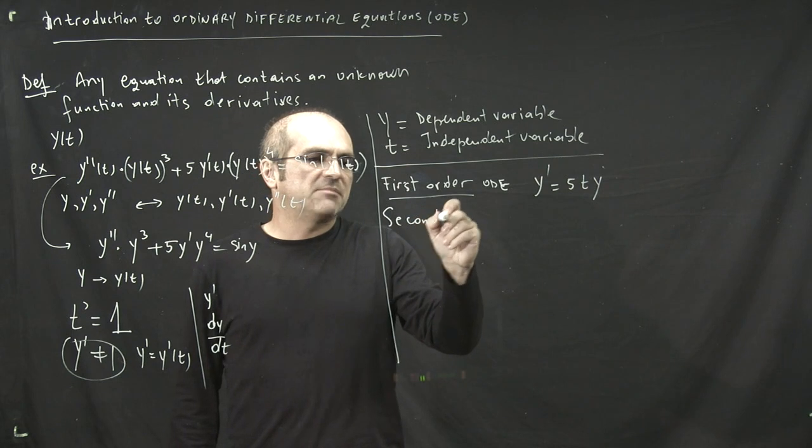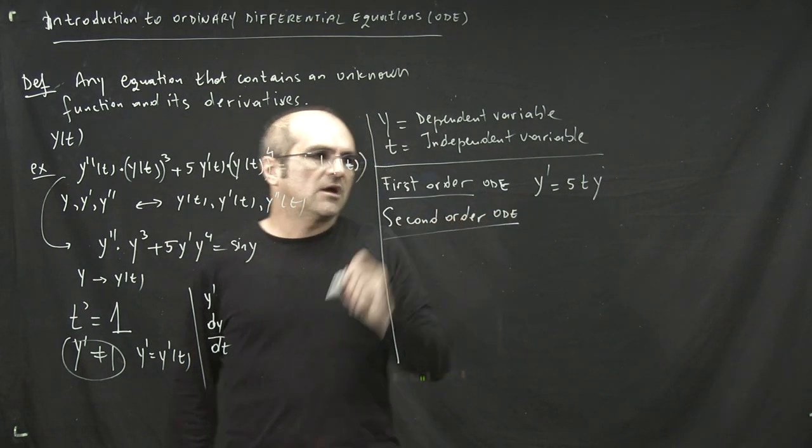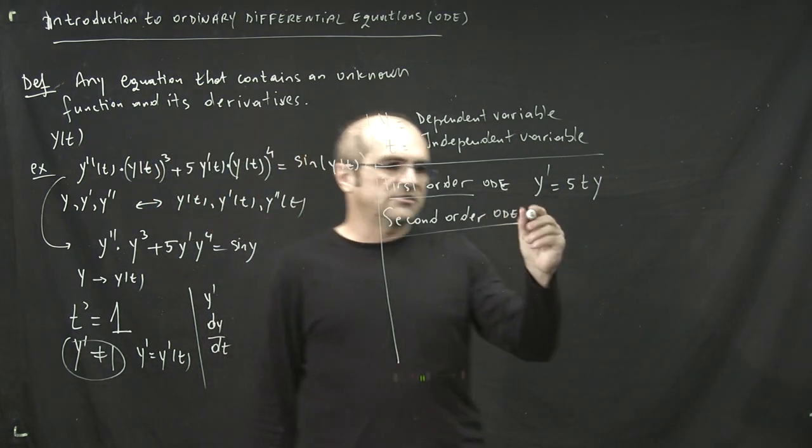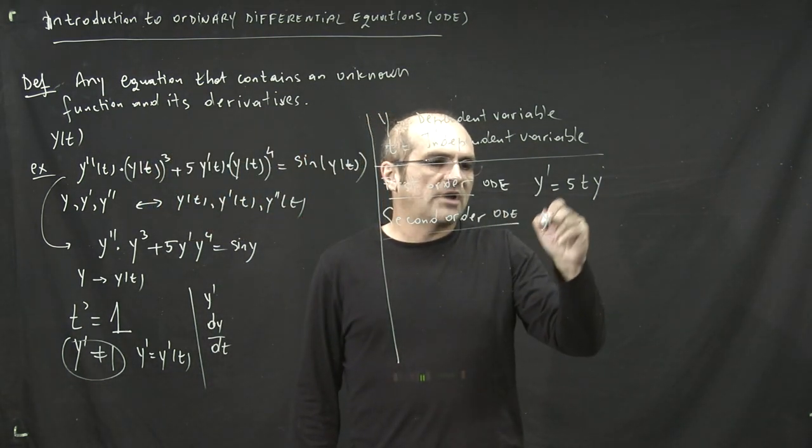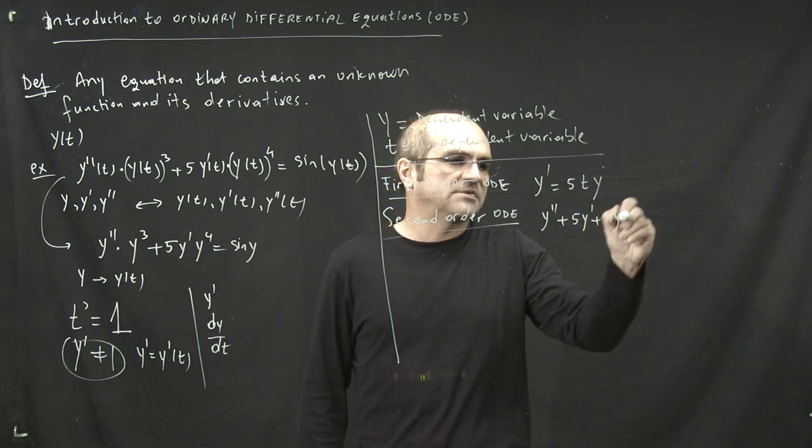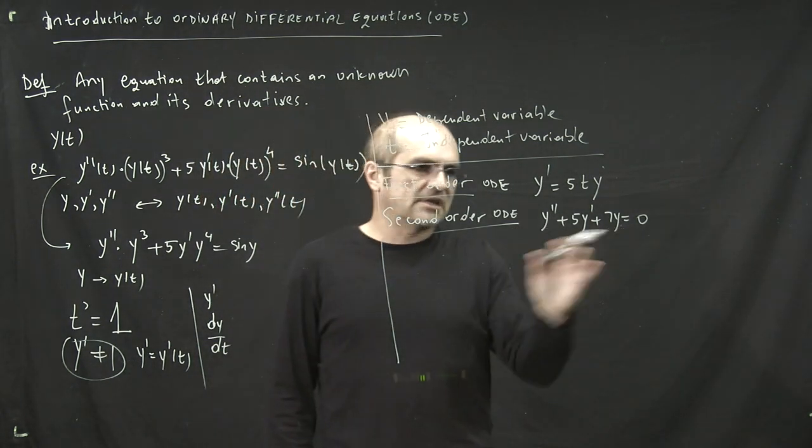Another important type that we're going to study later, the second order ODE, obviously it's an ODE that depends on the second derivative as well. So you can have y double prime plus 5y prime plus 7y equals 0 - that's actually a type of ODE which we will study in more detail later.